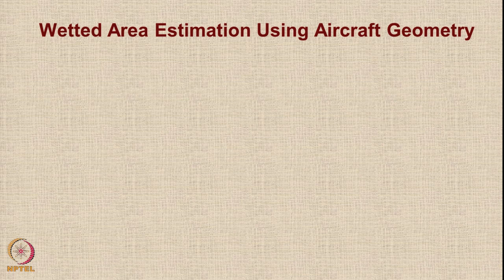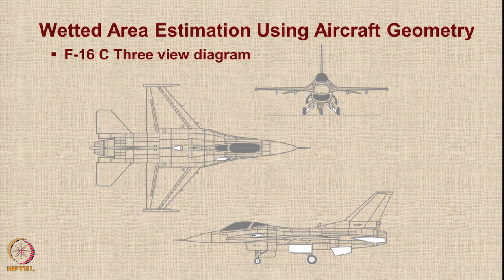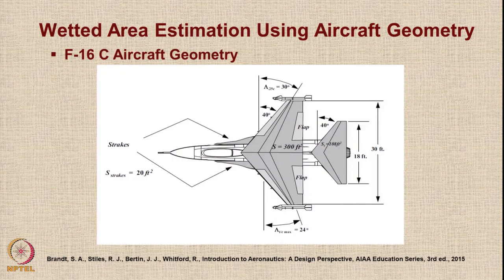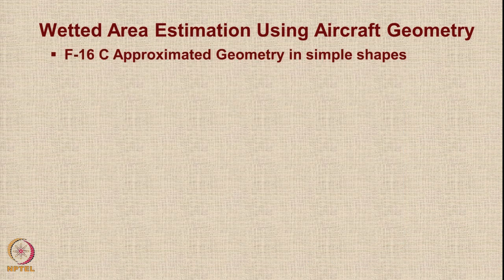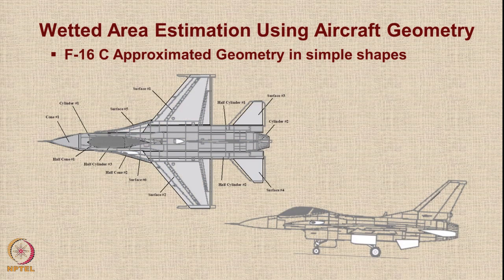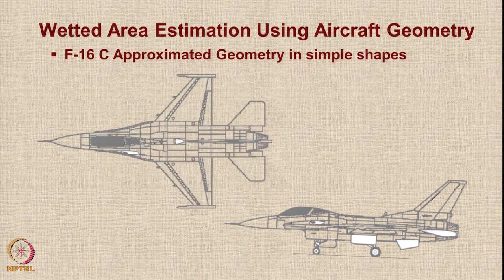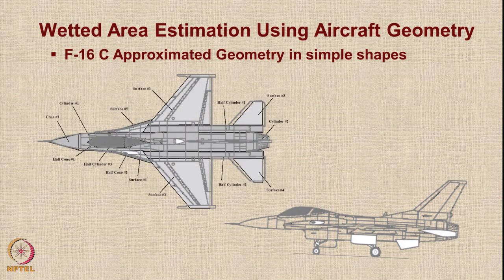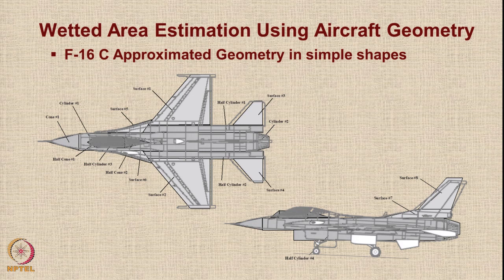Now let us look at the second method: converting the aircraft geometry into standard simple shapes using a three-view diagram and the geometric data from Brandt, Stiles, Burton and Whitford. We approximate the geometry with simple surfaces in top and side views, render those surfaces to remove internal details, and calculate Swet for each component using standard equations. The total area from this method comes out to 1418 square feet.